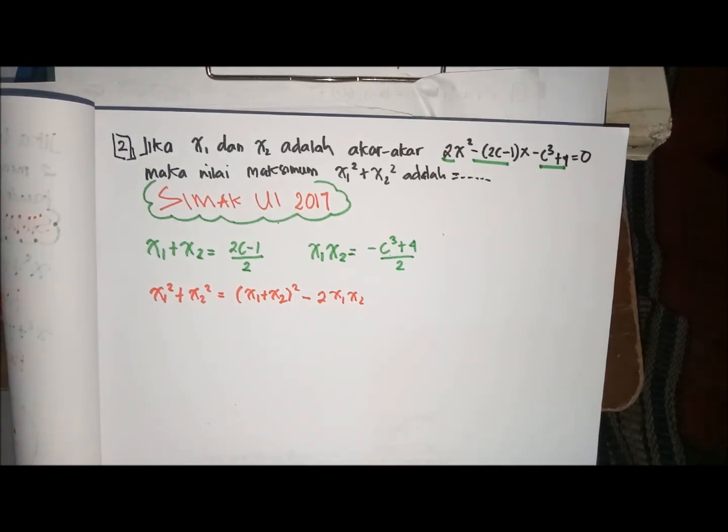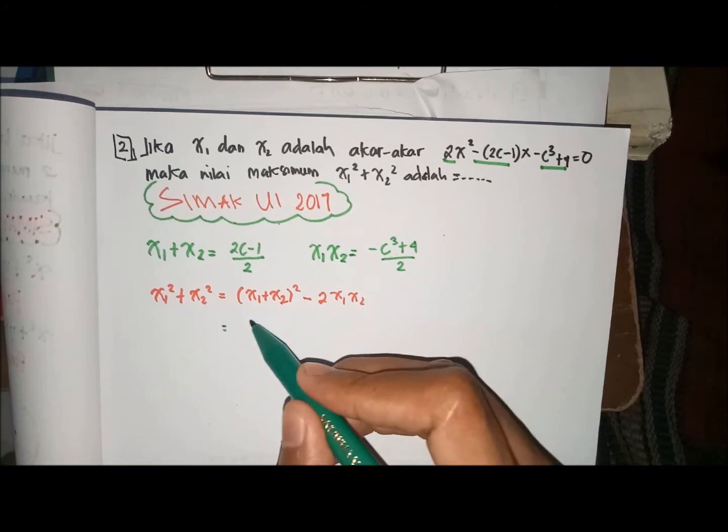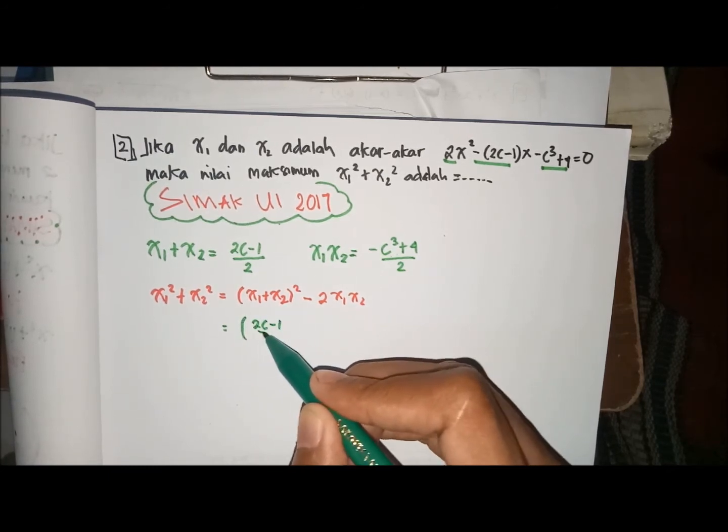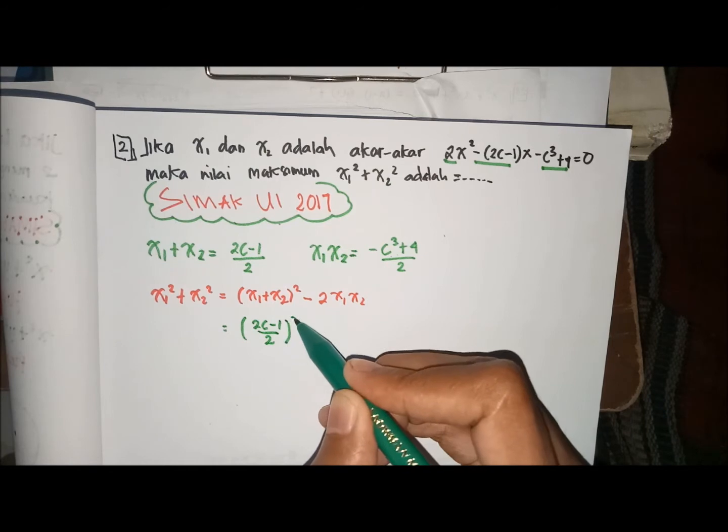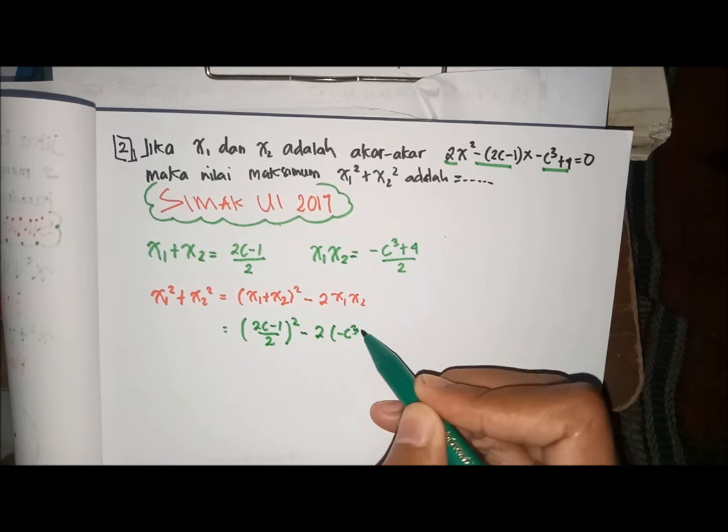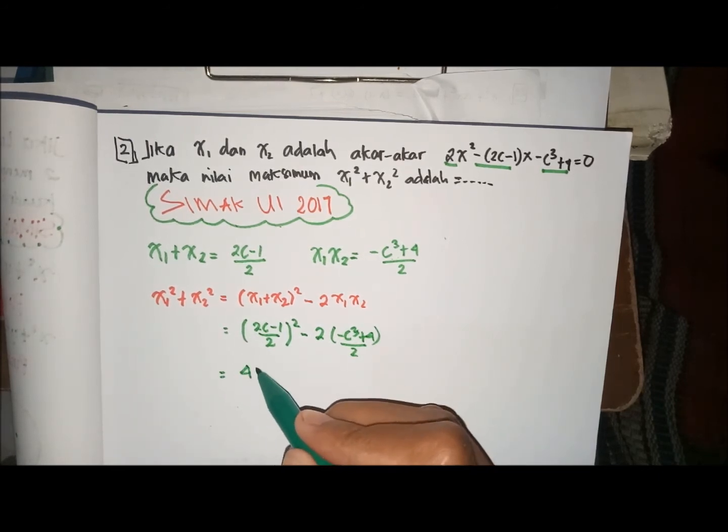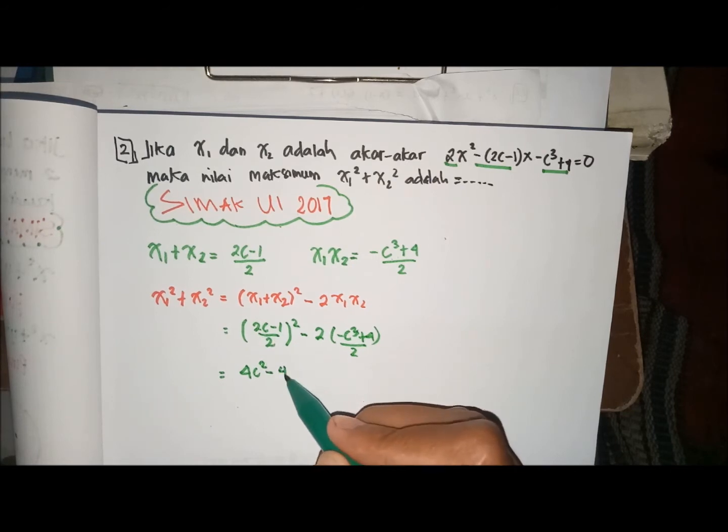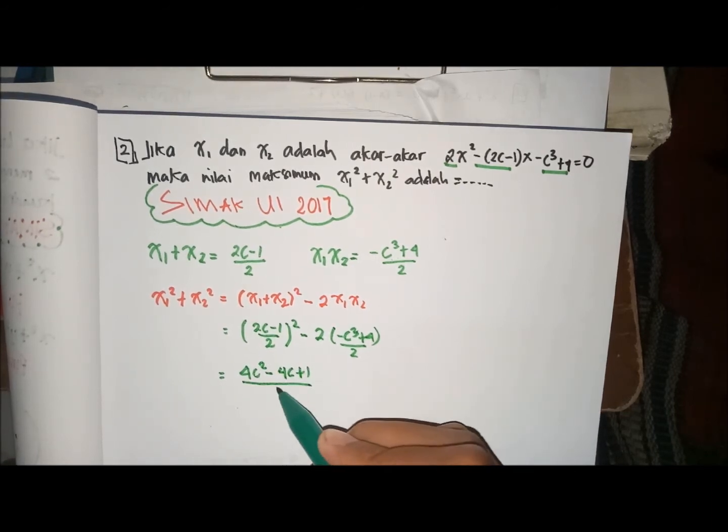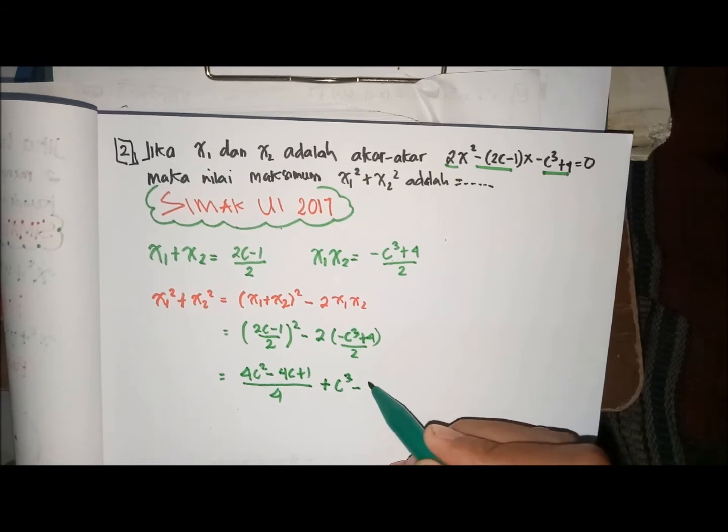Sekarang kita lanjutkan bahwa kita punya model X1 plus X2 itu sama dengan 2C min 1 per 2 kuadrat min 2 min C bangka 3 plus 4 per 2. Sehingga bisa didapatkan bahwa di sini 4C kuadrat min 4C plus 1 per 4.